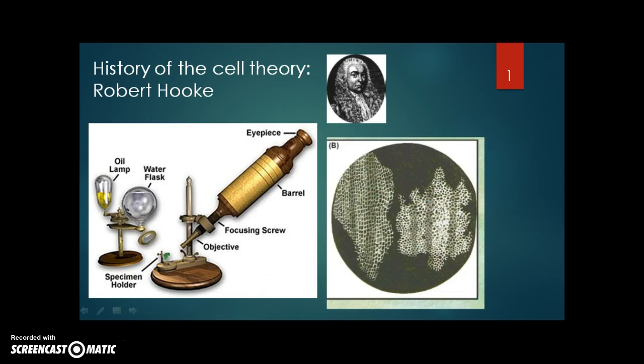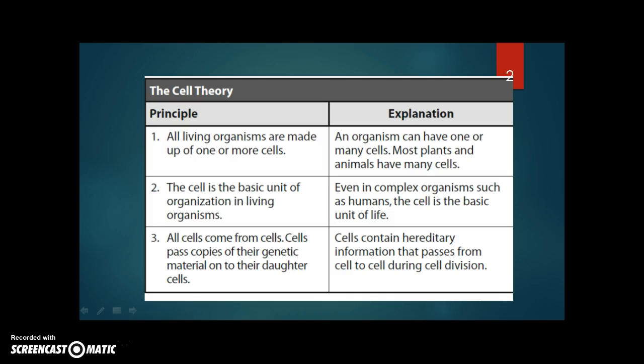Later, Virchow proposed that cells divide to form new cells, suggesting that every cell came from a cell that already existed. All these observations are summarized as the cell theory, which has three main principles.